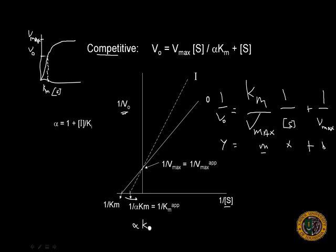And apparent means the apparent Km value for the inhibitor. So this would be the apparent Km. This would be the Km.